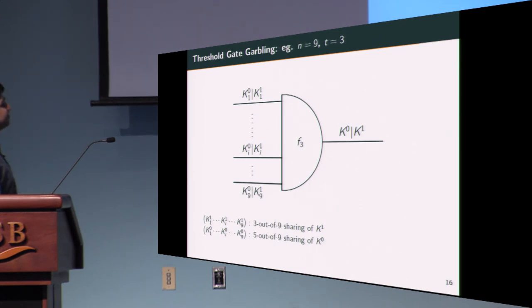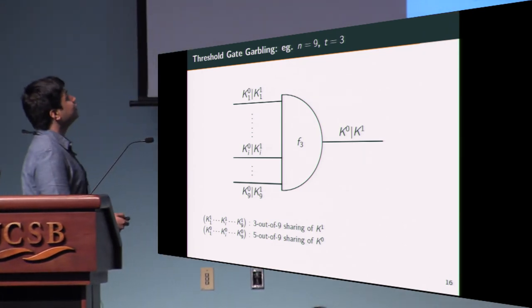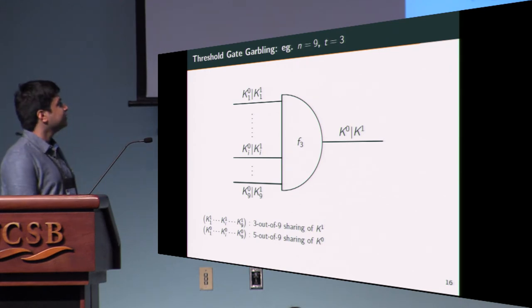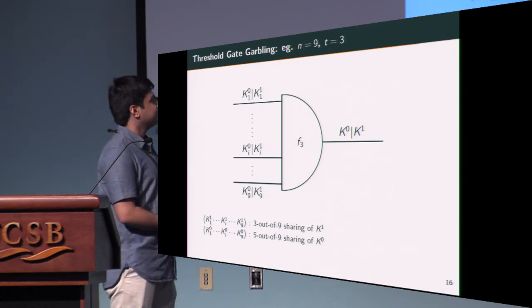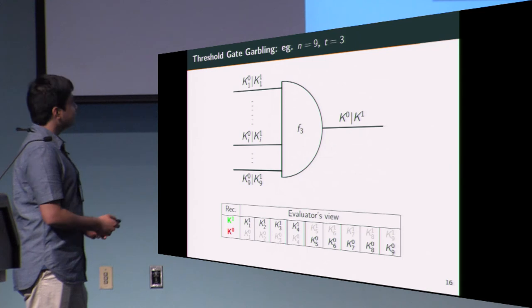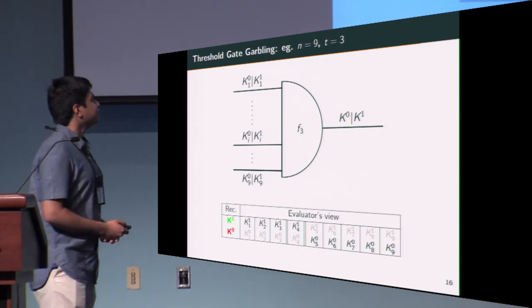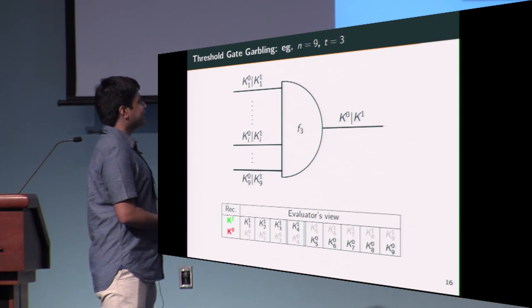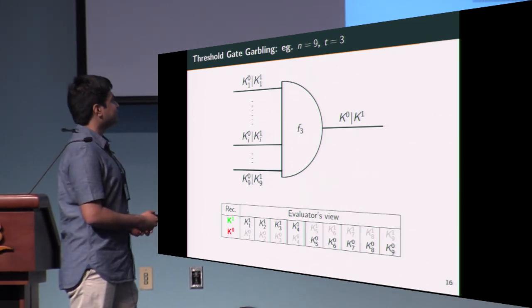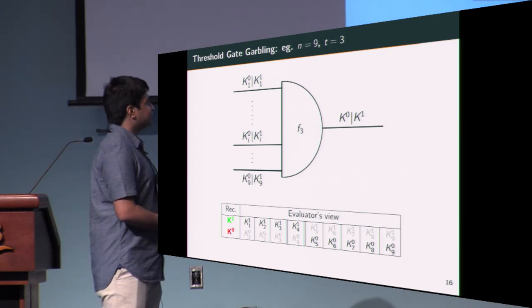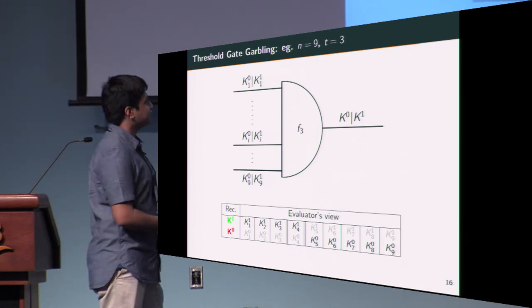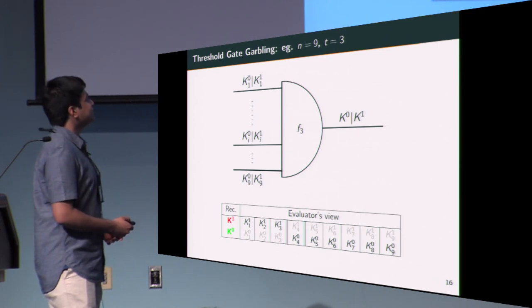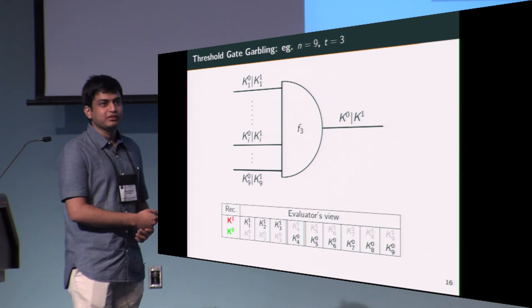Let's consider a concrete example where we have N inputs—sorry, 9 inputs—and the threshold is 3. So the Ki ones comprise the 3 out of 9 sharing of K1, and the Ki zeros comprise the 5 out of 9 sharing of K0. For argument's sake, consider the case where an evaluator has 4 or more Ki ones. This enables him to reconstruct K1 quite easily, but this also directly implies that he has 5 or fewer shares of K0. As K0 is 5 out of 9 shared, this means that it's completely inaccessible to the evaluator, and this captures authenticity. Equivalently, if he has 6 or more shares of K0, that means that he has 3 or fewer shares of K1, which renders K1 completely inaccessible when he is able to reconstruct K0.